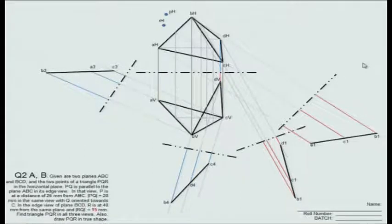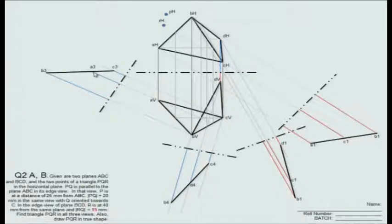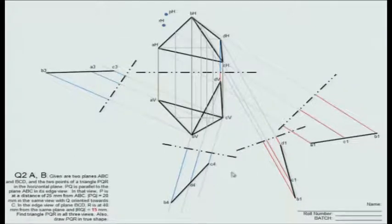Now, come back to the question. We are required to work with the edge view of ABC and the edge view of plane BCD. We can choose any of these edge views for ABC and likewise any of these edge views for BCD. For example, if we choose this as the edge view of ABC, we can work with either this and this, or if we choose a different edge view of ABC, again we can work with this and this. So we have four possible combinations. Let us try to investigate each combination one by one.